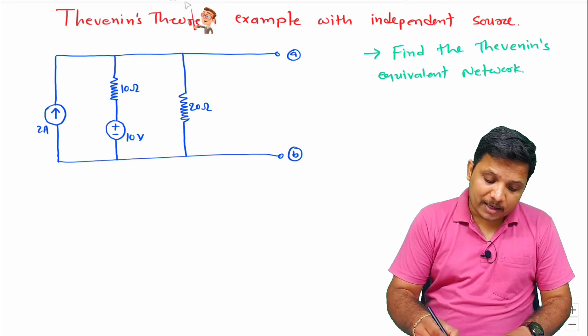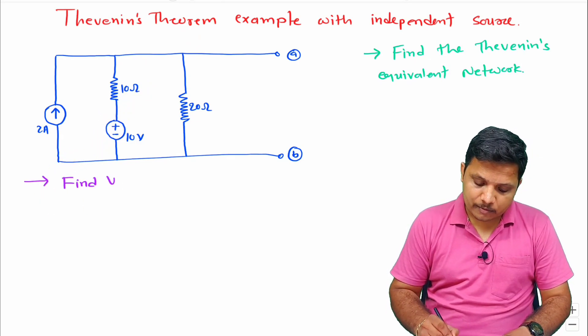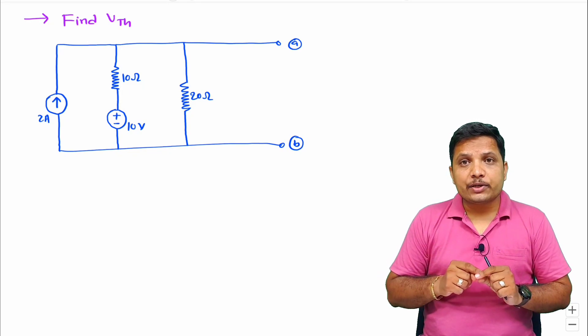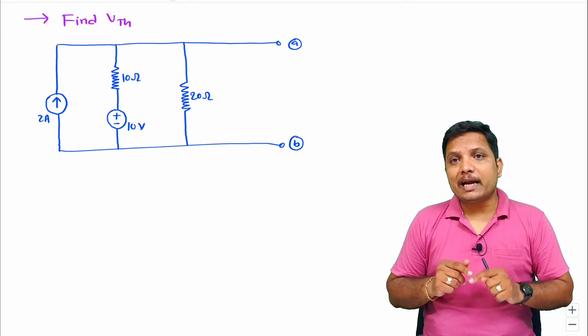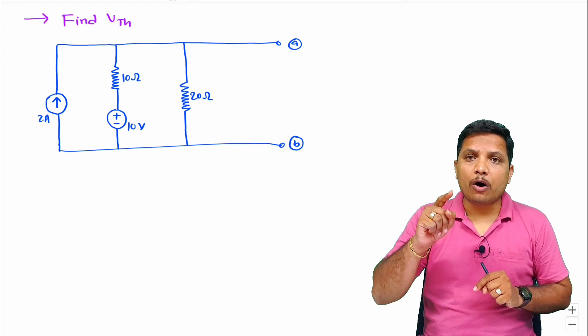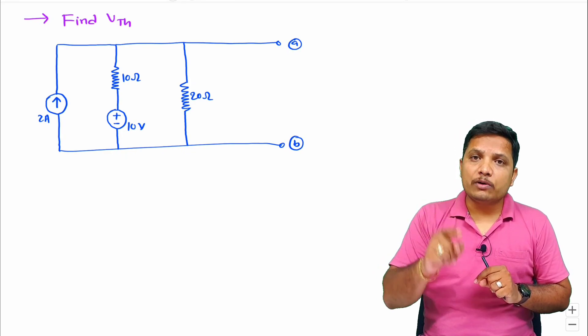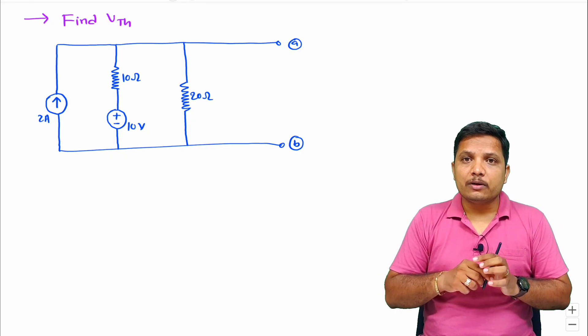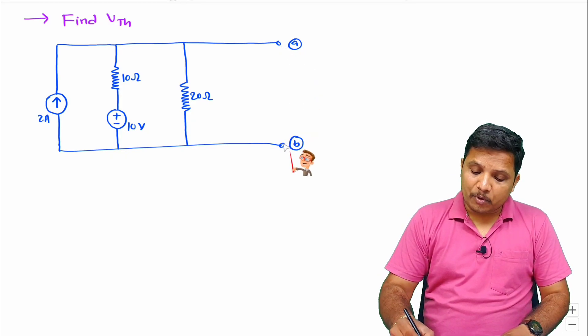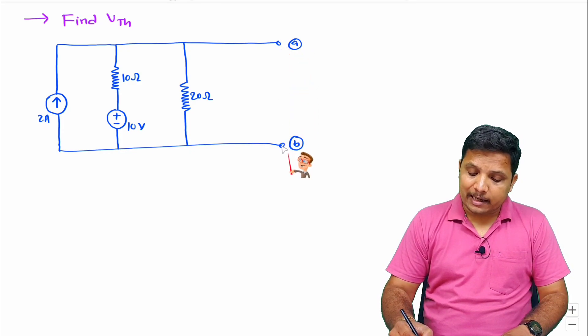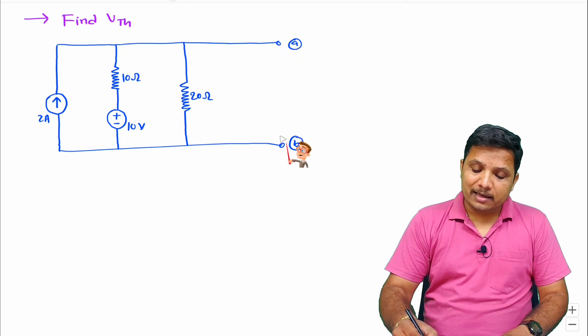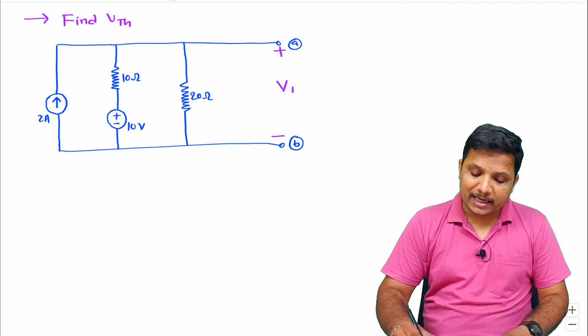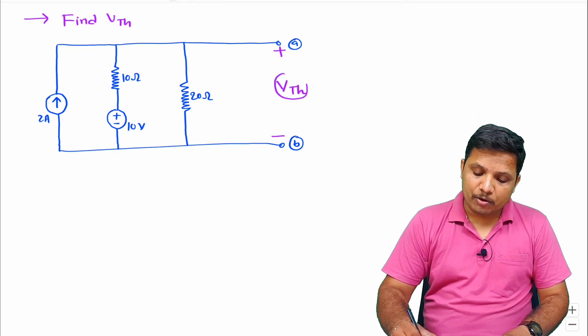Let me explain you first how we can find VTH. Now my dear students, when you want to find VTH, then only one thing you'll have to do - remove all the circuit which is there at output and then measure voltage at output. Here at output nothing is connected, so we don't need to eliminate anything. We need to measure voltage at output. So let us say here I'm measuring voltage by this polarity plus minus. This will be our VTH voltage.